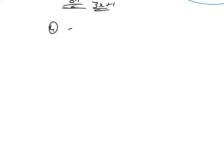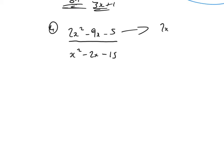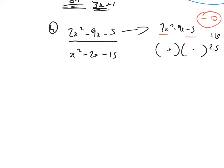Example 4: 2x squared minus 9x minus 5 over x squared minus 2x minus 15. Let's factorise the top: 2 times minus 5 is minus 10. The product is negative, so the signs will need to be different. Combinations for 10: 1 and 10, 2 and 5. Which pair gives minus 9 in the middle? That's 1 and 10 — so plus 1 and minus 10. Drop 2x into both brackets. The first bracket can't be factorised further, but from the second I can take out a common factor of 2: 2 into 2x goes x and 2 into 10 goes 5.